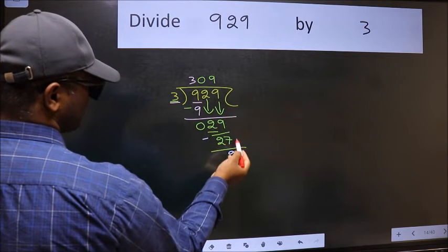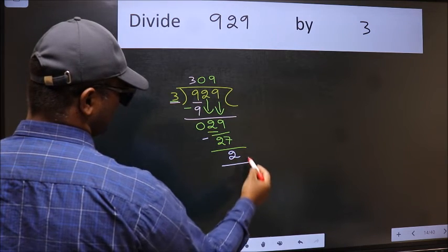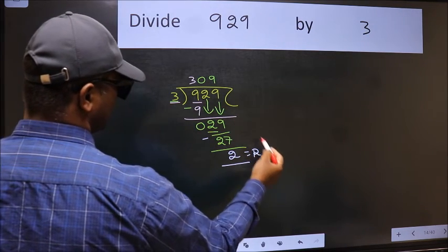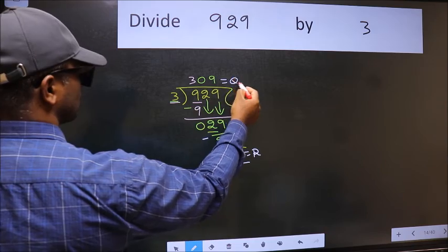No more numbers to bring it down. So we stop here. This is our remainder and this is our quotient.